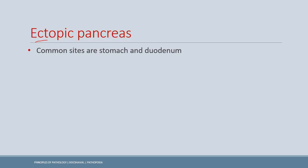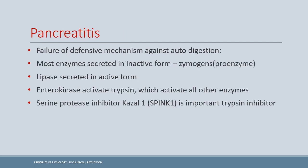The pancreas may also be present away from its normal location, forming ectopic pancreas. The most common sites are the stomach and duodenum. Moving on to pancreatitis — the basic problem is autodigestion; keep this in the back of your mind.